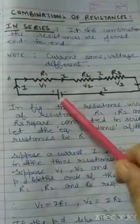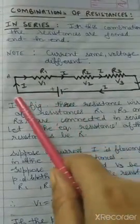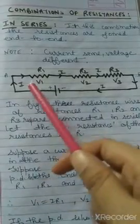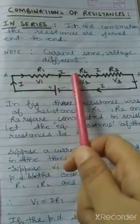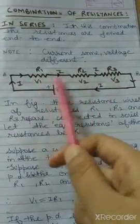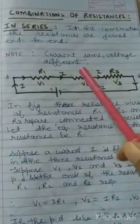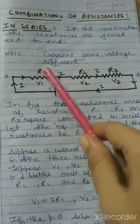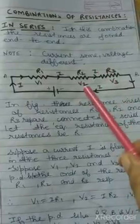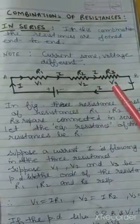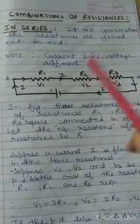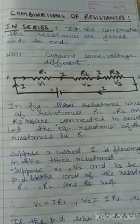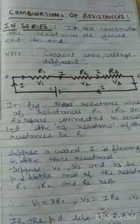If current I will flow, there will be only one path for the current to flow. Therefore, current will be same across all three resistances, but voltage will be divided. So across R1 we take V1, R2 we take V2, and R3 we take V3, and we will find out what will be the equivalent resistance using Ohm's law.